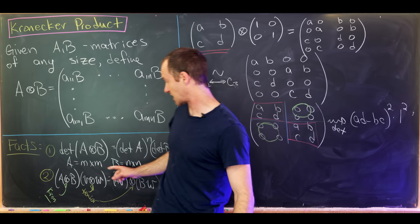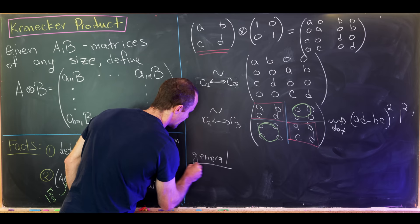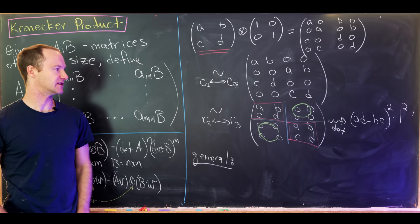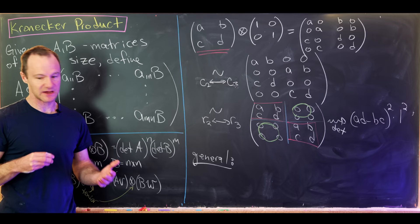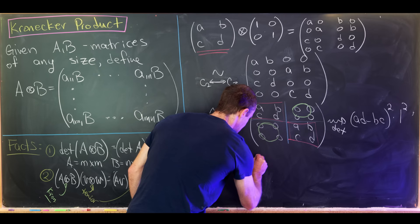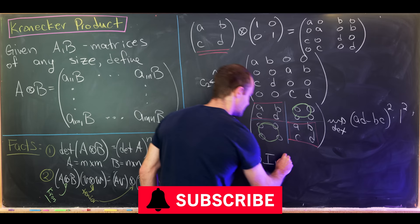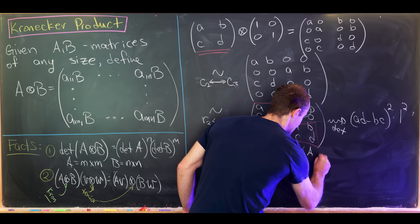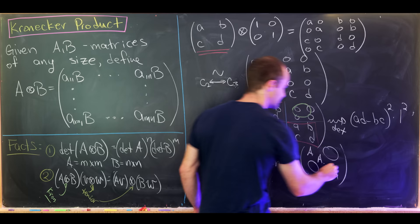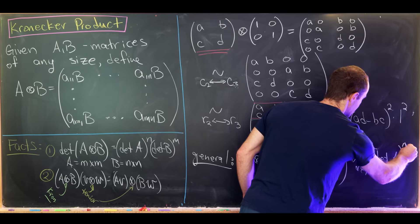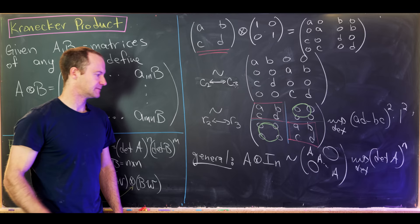The general case has essentially the same proof using row and column operations — you just have to be careful keeping track of all the indices. In general, A⊗I_n is row and column equivalent to a block diagonal matrix with copies of A on the diagonal and zeros on the off-diagonal. Taking the determinant of such a block diagonal matrix gives det(A)^n.